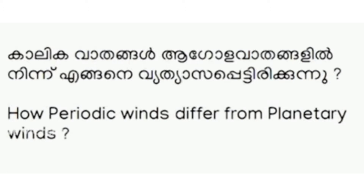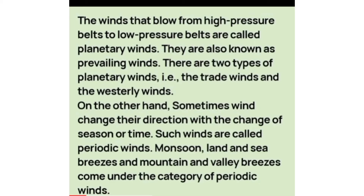How do periodic winds differ from planetary winds? The winds that blow from high pressure belts to low pressure belts are called planetary winds. They are also known as prevailing winds. There are two types of planetary winds: trade winds and westerly winds.